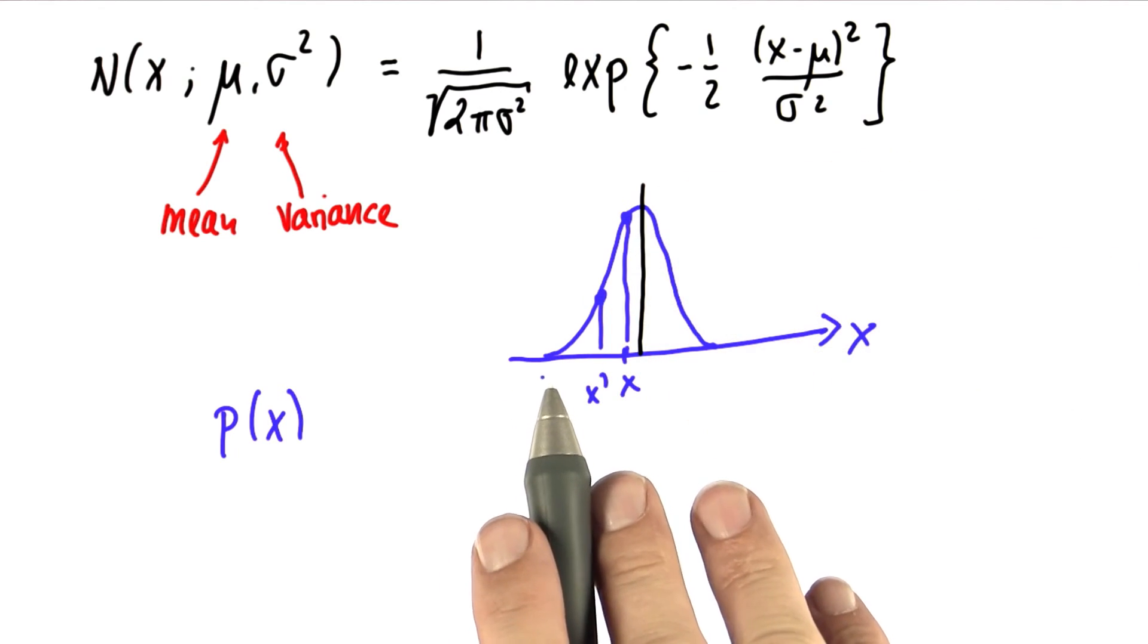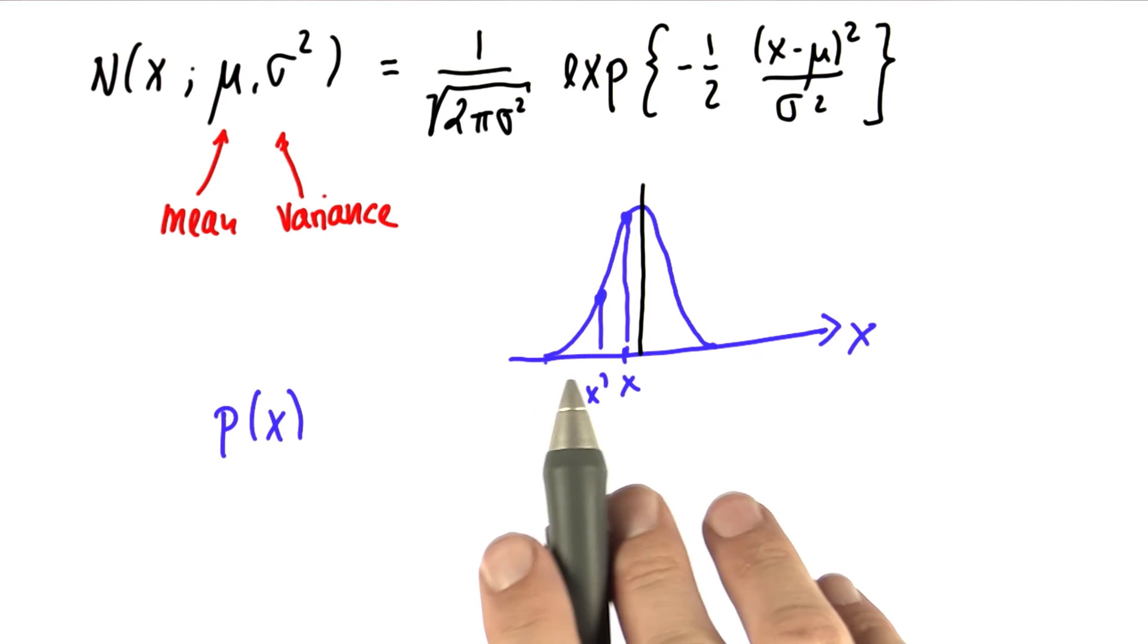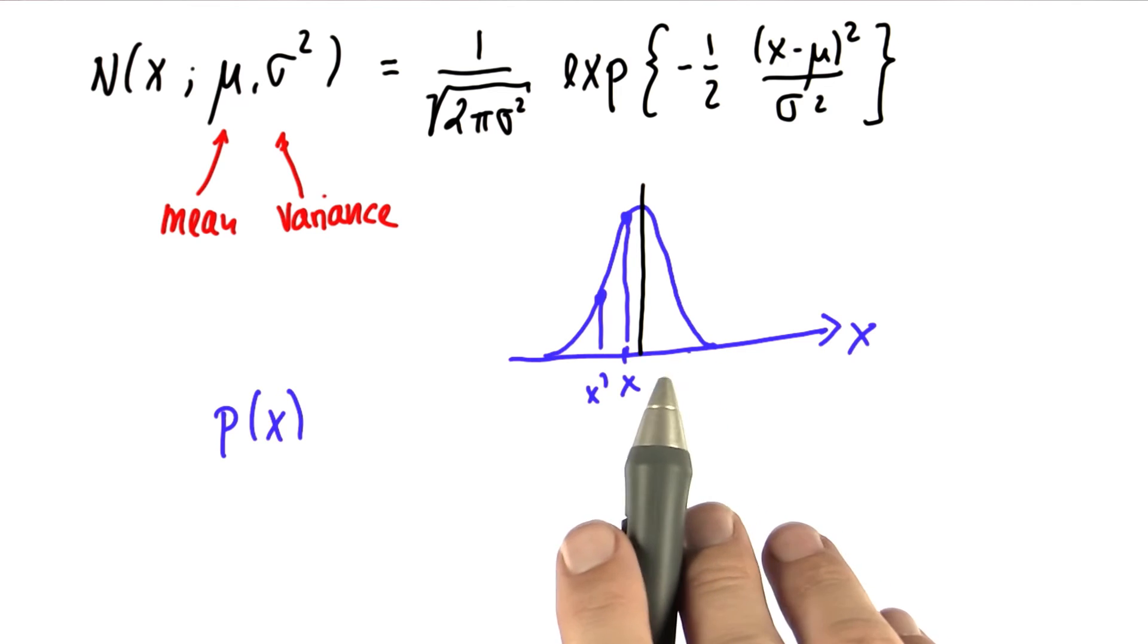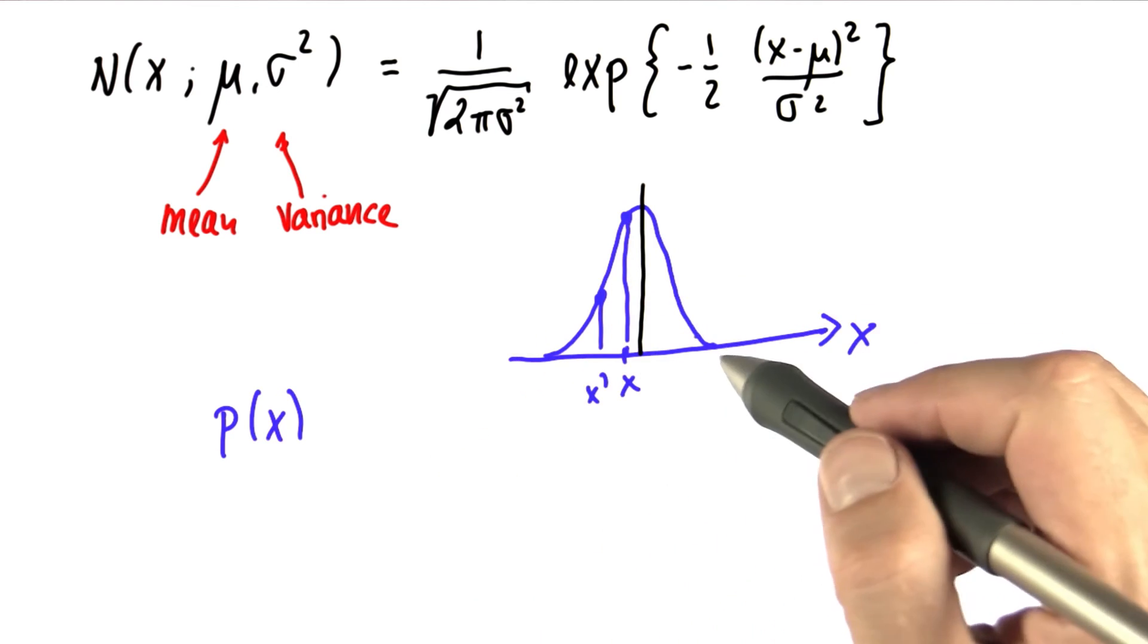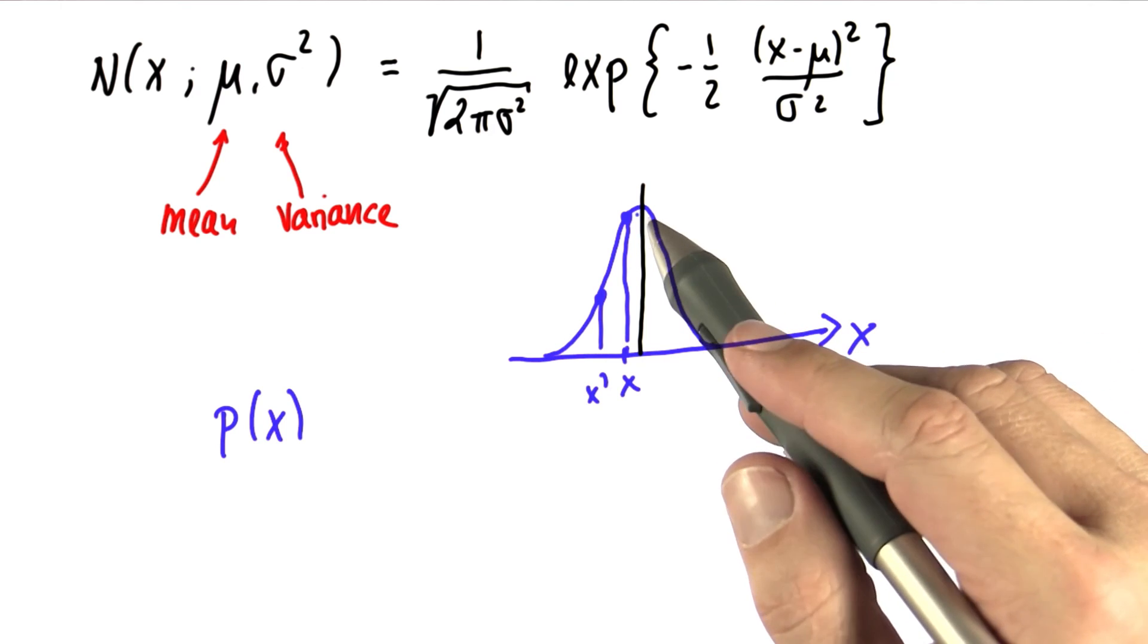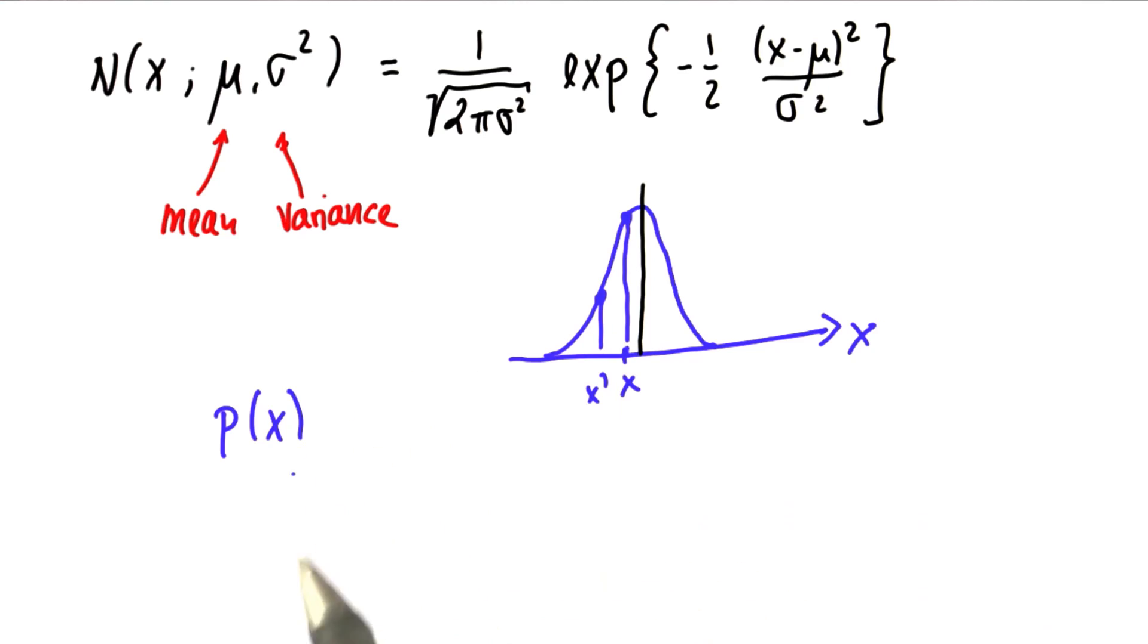Now obviously, the normal has an entire continuous space of outcomes, and obviously that renders each individual outcome of probability zero. But in essence, you can think of the height of this thing over here as being proportional to the probability that this value is being drawn.